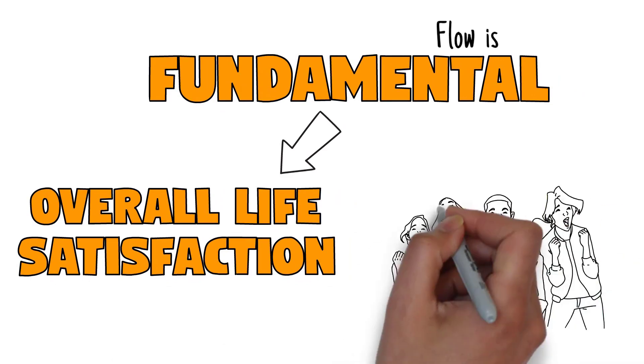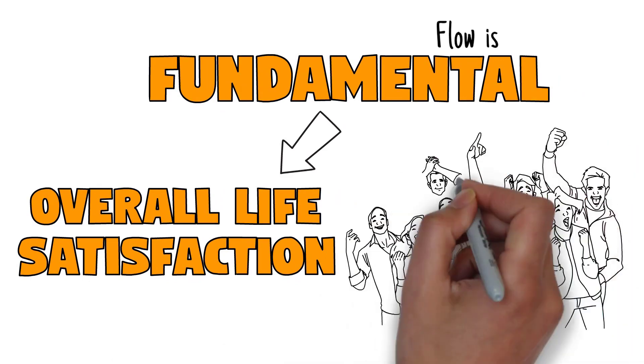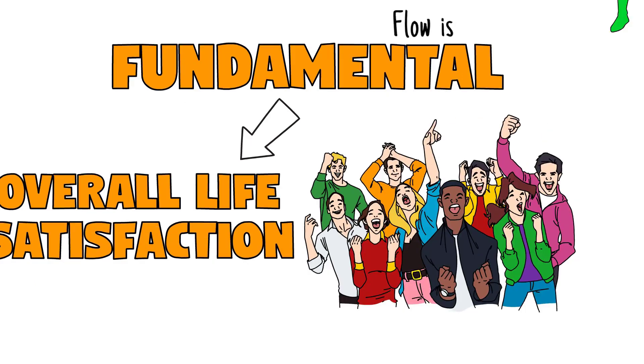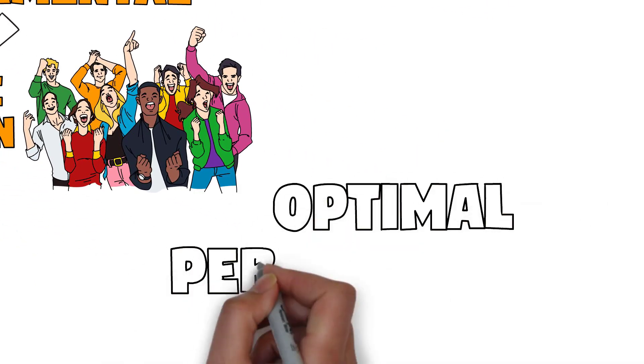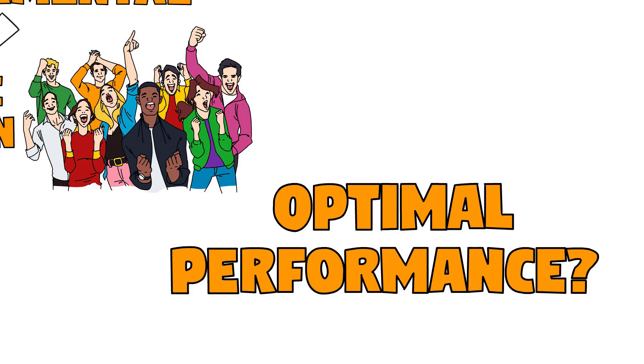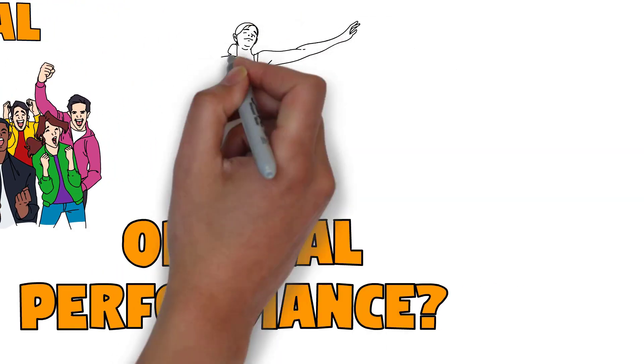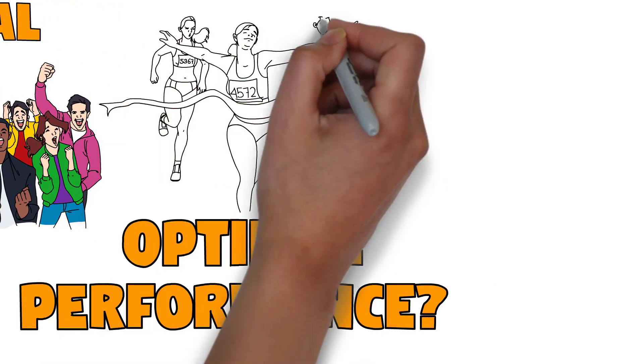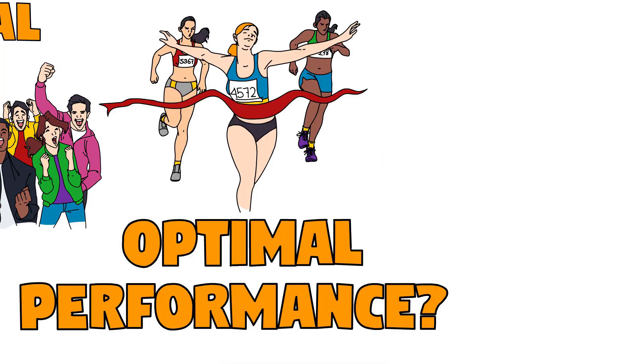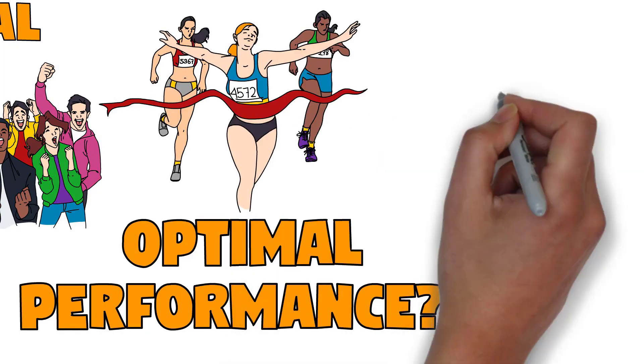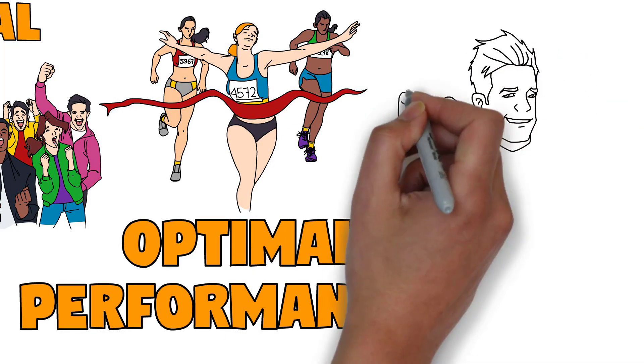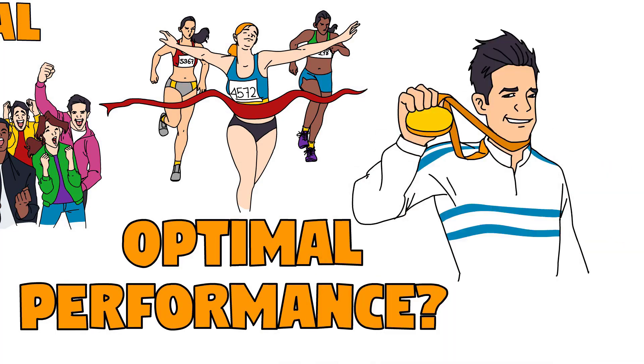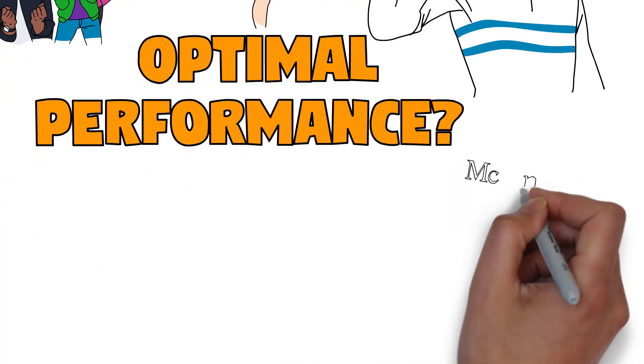The next question researchers turned their attention to was: how optimal are we talking about? Turns out pretty optimal. What we now know in athletics, for example, is that pretty much every gold medal or world championship that's ever been won has a flow state at its heart.